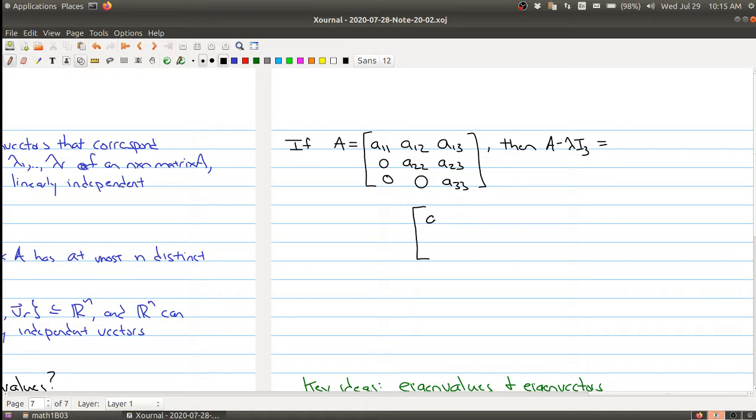And then because that's the form, if I take A minus lambda I_3, I will get - I won't have enough room to do it right here, so let me just move it down to the next line. I will have a11 minus lambda, a12, a13, zero, a22 minus lambda, and a23, and then zero, zero, and a33 minus lambda.